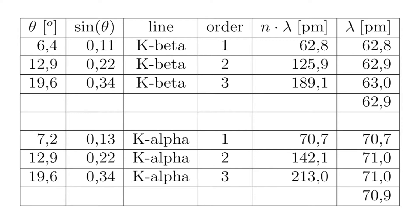For theta equal to 19.6 degrees, sinus theta gives 0.34 and the k-beta line of the third order gives n times lambda equal to 198.1 picometers, which results in lambda being 63.0 picometers. This gives us the average wavelength for the k-beta line at 62.9 picometers.